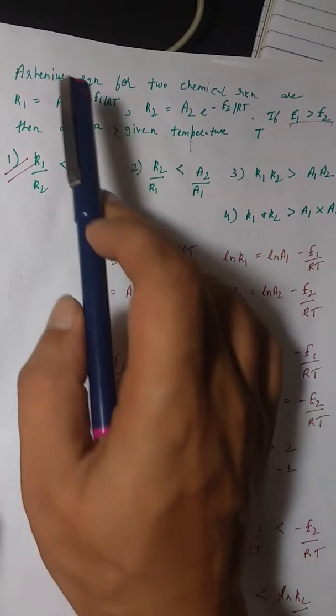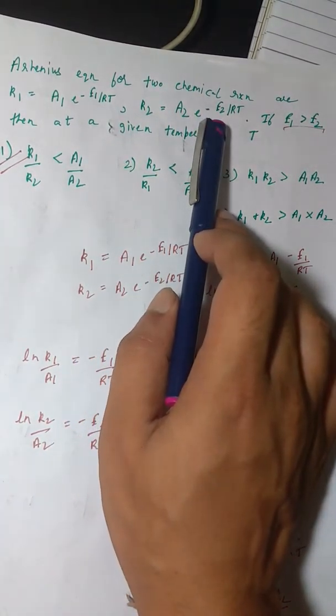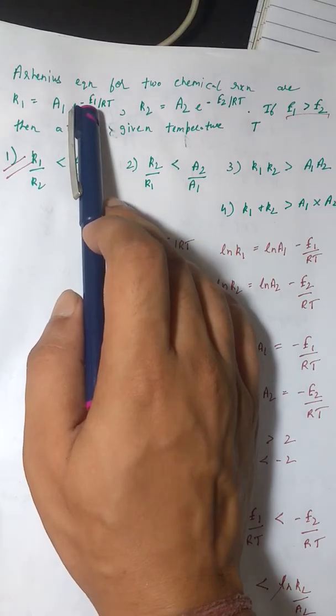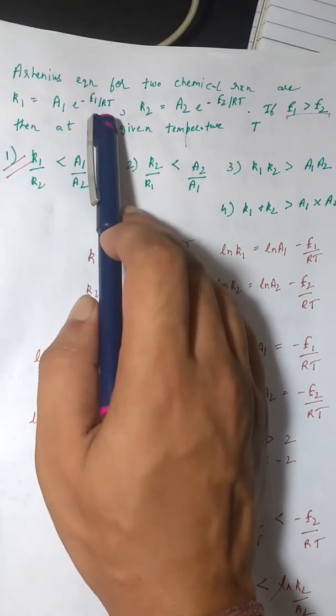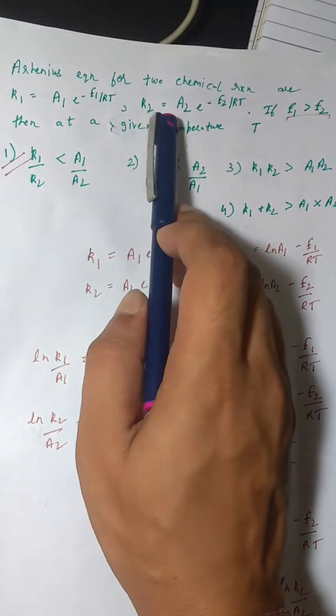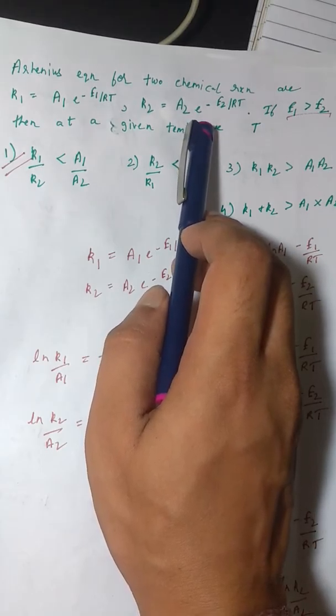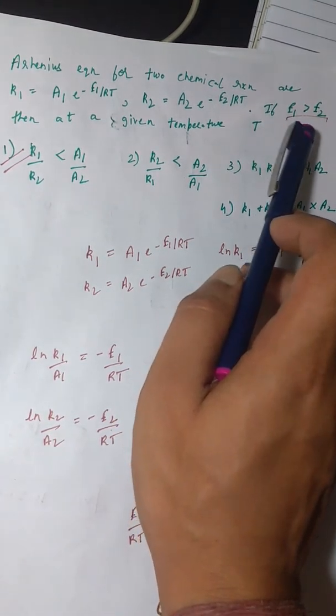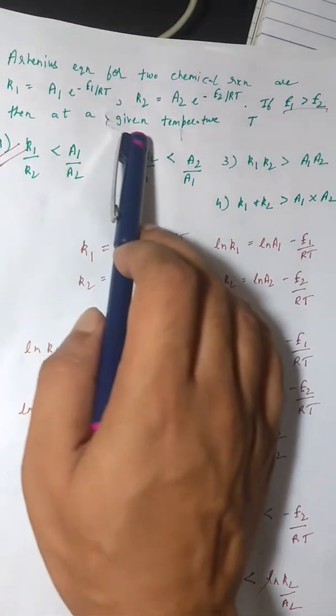The Arrhenius equation for the two chemical reactions are given as k1 = A1 e^(-E1/RT) and k2 is given to us as A2 e^(-E2/RT). It has been given to us that if E1 is greater than E2, then at a given temperature, which one of the following options is true?